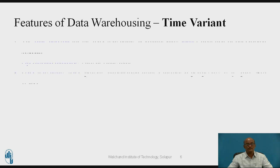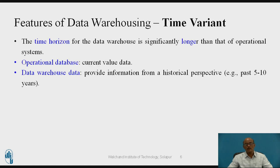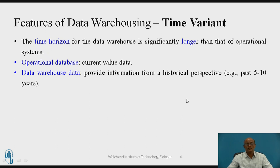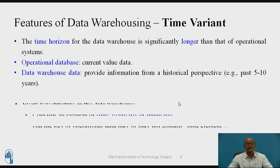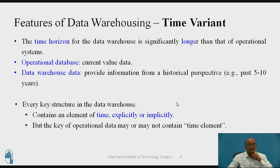The third feature is time variant. The time horizon for the data warehouse is significantly longer than the operational system. Whatever data we are going to keep in the data warehouse will be kept for a long term. Such data can be stored for a historical perspective — maybe 5 to 10 years of data is stored in a data warehouse. Every key structure in the data warehouse contains an element of time, explicitly or implicitly.